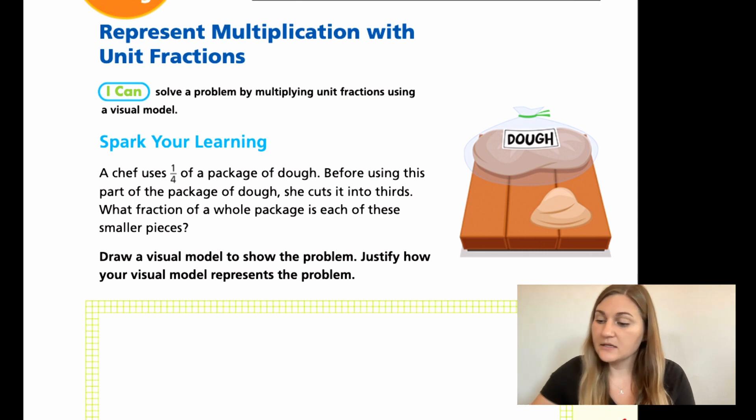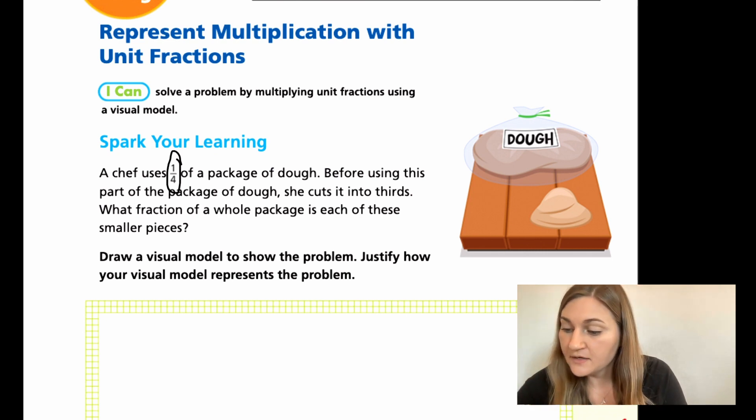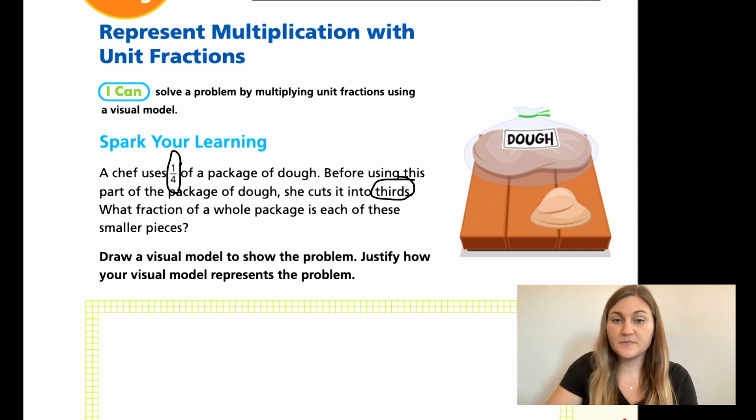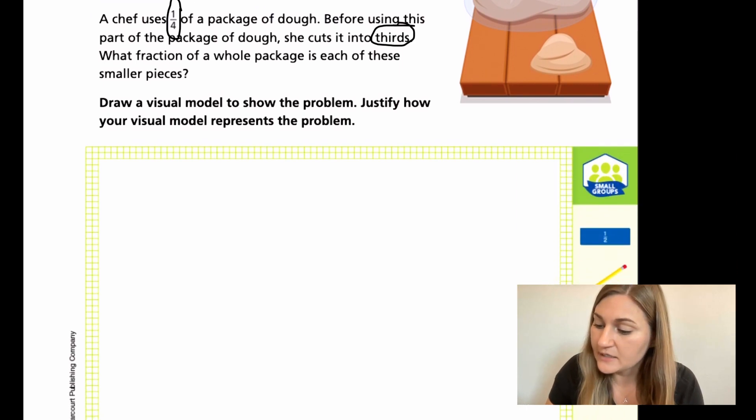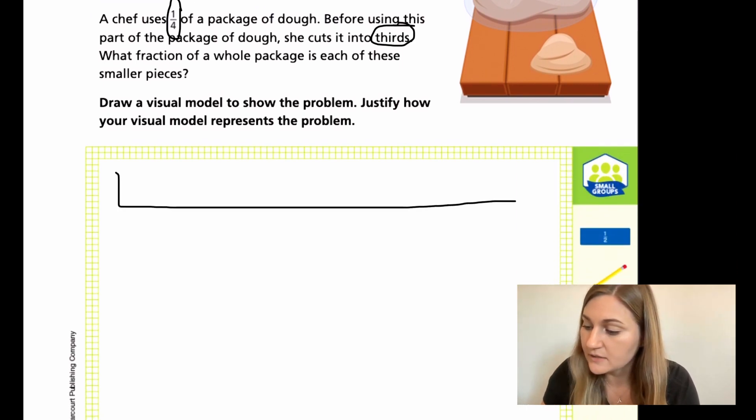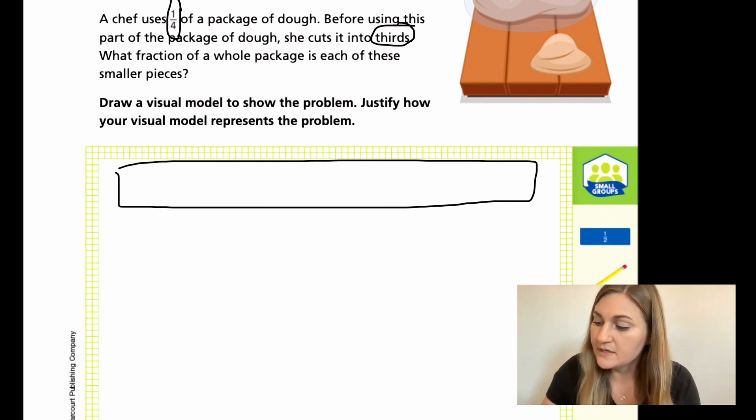Alright, so I automatically recognize that I have a fourth here and then in words, I have thirds. So I'm dealing with one fourth and a third. So what it's saying is there's an entire package of dough and I'm going to use this as rectangles. So here is my one whole package of dough.